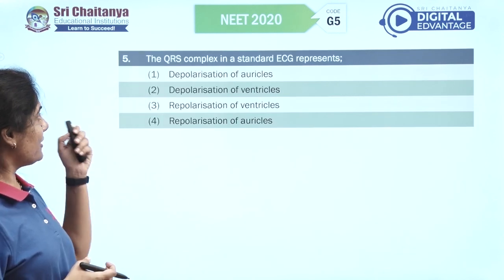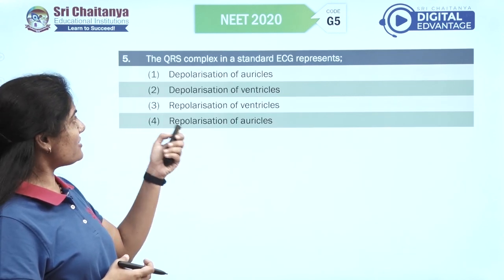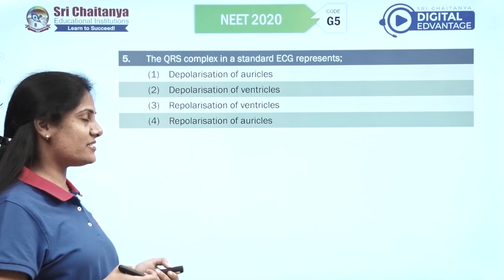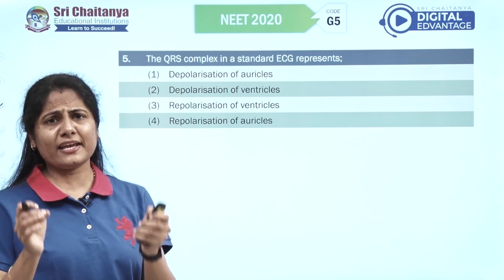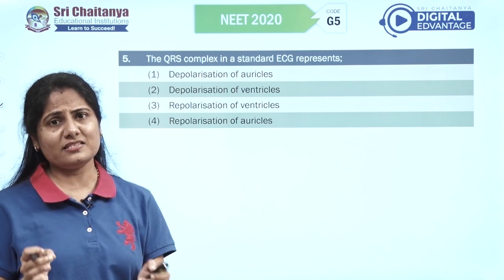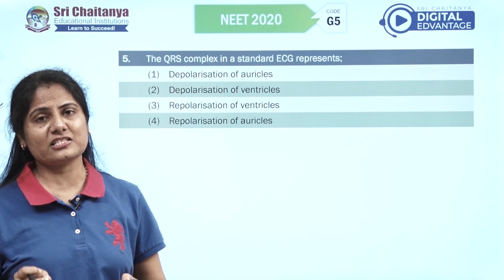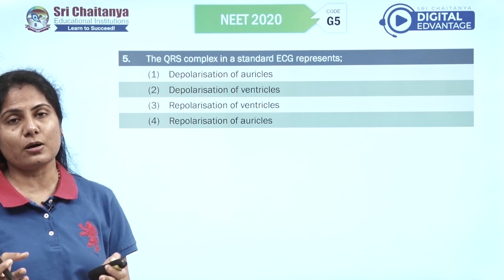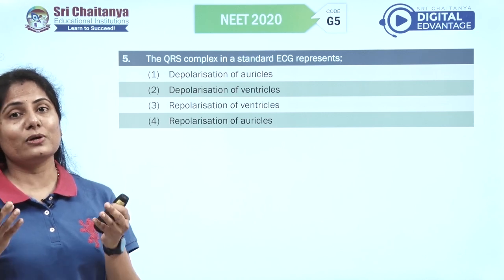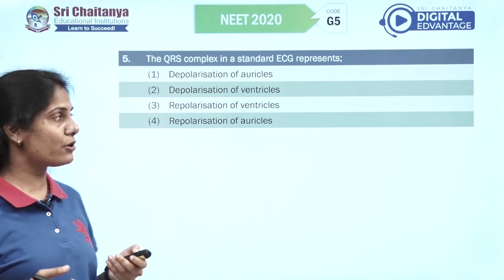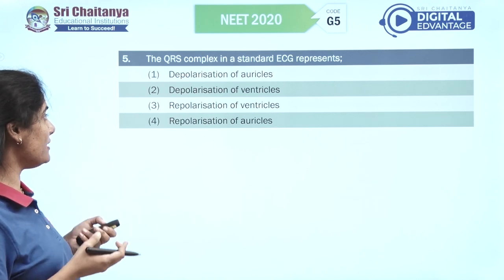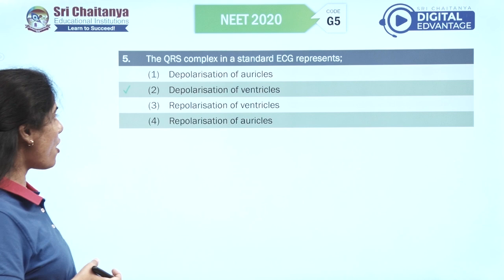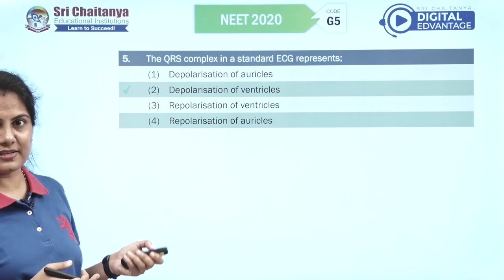The QRS complex in a standard ECG — straight from NCERT text — by counting the number of QRS complexes you can actually have a count of the number of heartbeats. It basically represents the depolarization of ventricles.